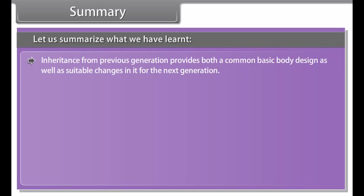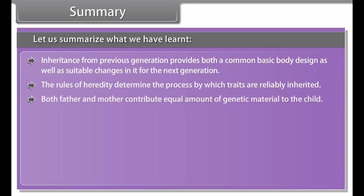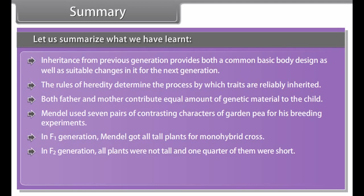Sex determination: most human chromosomes have a maternal and a paternal copy, and we have 22 such pairs, out of which one pair is called sex chromosomes. This sex chromosome is not always a perfect pair. Women have a perfect pair of X chromosomes, but men have a mismatched pair — one is a normal-sized X chromosome and the other is a short Y chromosome. So women are XX and men are XY.